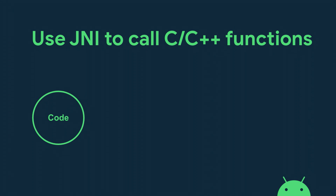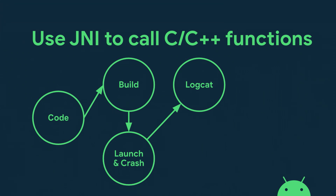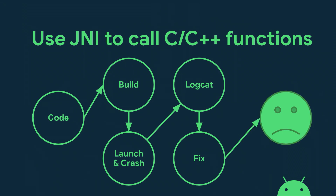Without the expanded JNI support, the typical workflow looks like this: you write your code, you build it, you launch to the emulator or a real device, and the app instantly crashes. You open up logcat and you probably see an unsatisfied linker error. Then you stare at your code, figure out there's a typo, and fix it. This whole process is frustrating because the feedback loop is very long.